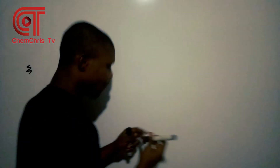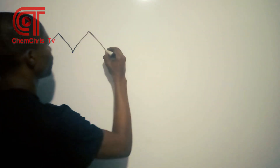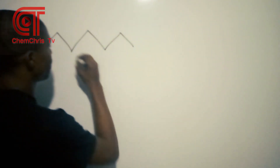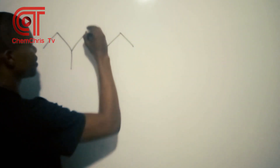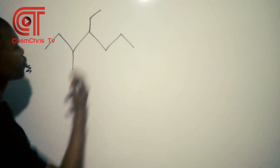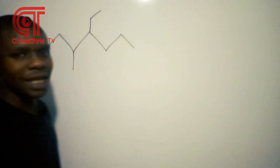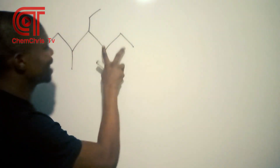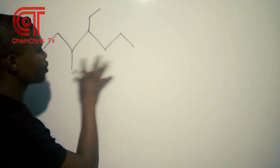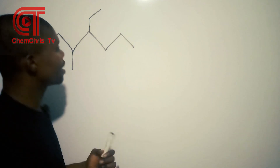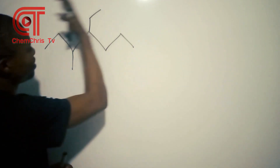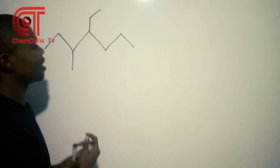Rule number one: take the longest continuous carbon chain and name it alone as the parent chain. So if you have a structure like this, the first thing you should do is take the longest carbon chain and name it as the parent chain.